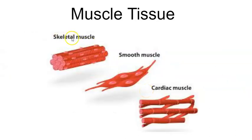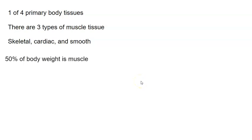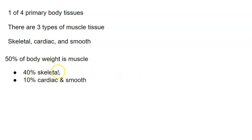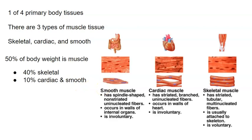The three types of muscle tissue are skeletal muscle, smooth muscle, and cardiac muscle. Muscle tissue is one of the four primary body tissues. It makes up about 50% of body weight — 40% of that is skeletal muscle, and the remaining 10% is cardiac and smooth muscle.